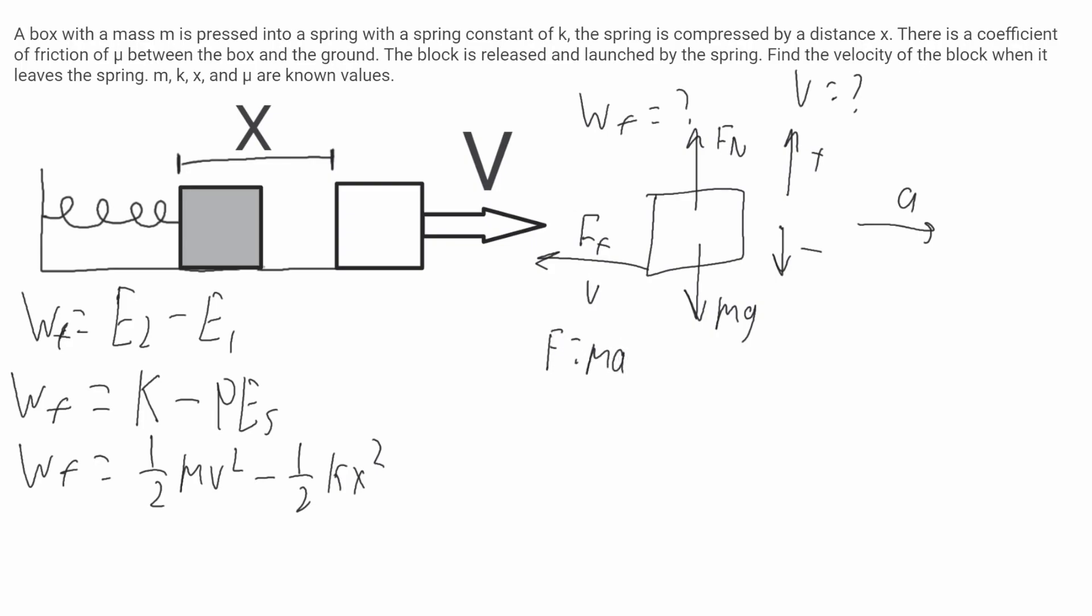This will be in the y. There is no y acceleration because this box doesn't jump off the ground or sink into the floor. So that'll be zero. The force in the y will be Fn, which will be positive, and mg, which will be negative. So it'll be Fn minus mg is equal to zero. So Fn is equal to mg.